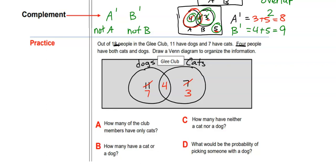7 + 4 + 3 = 14, but we need 18 total, so there are 4 more people who don't have a dog or a cat at all. So our Venn diagram has: 7 with only a dog, 4 with both, 3 with only a cat, and 4 outside both circles who have no pets whatsoever.